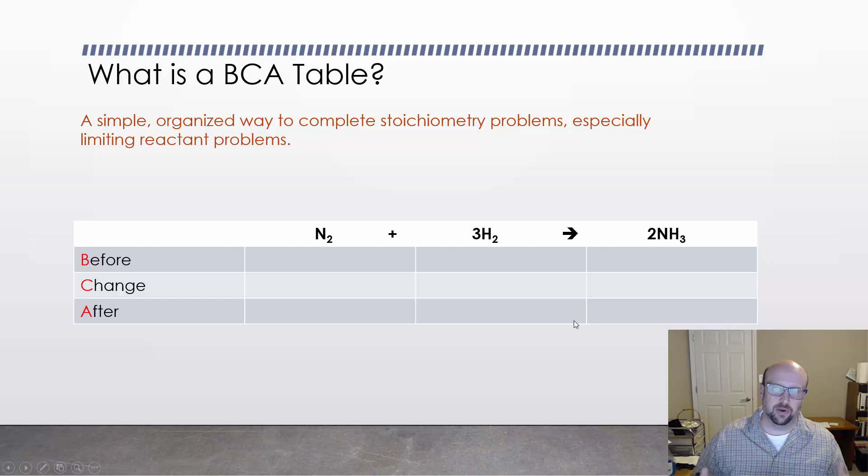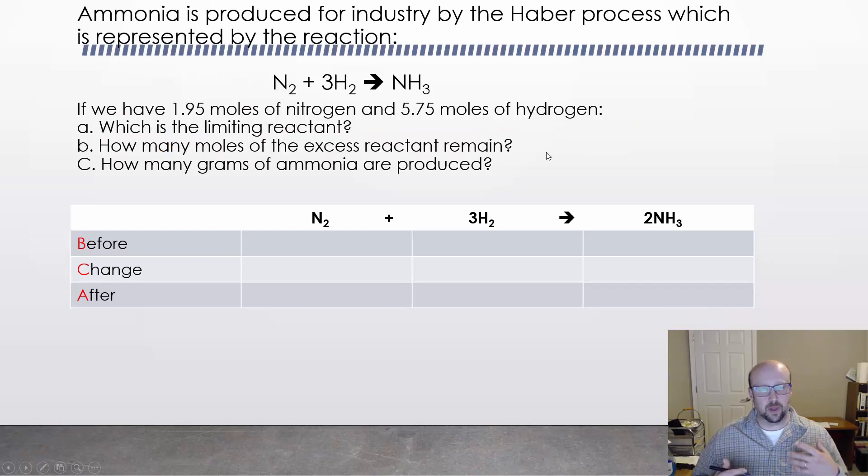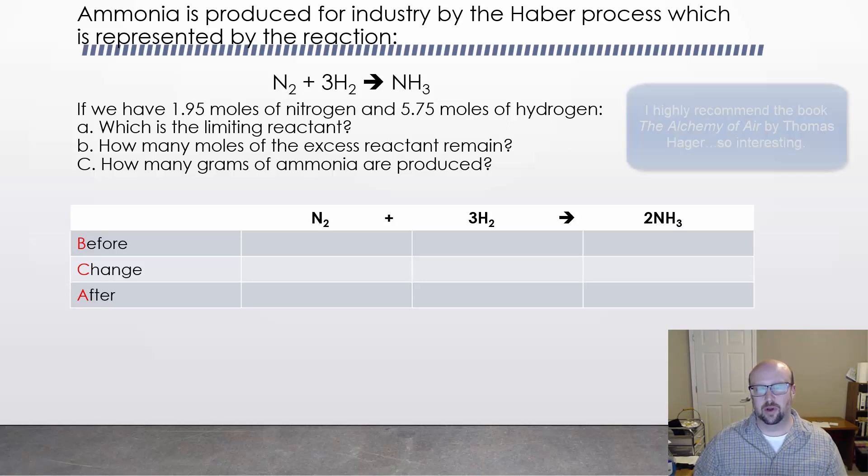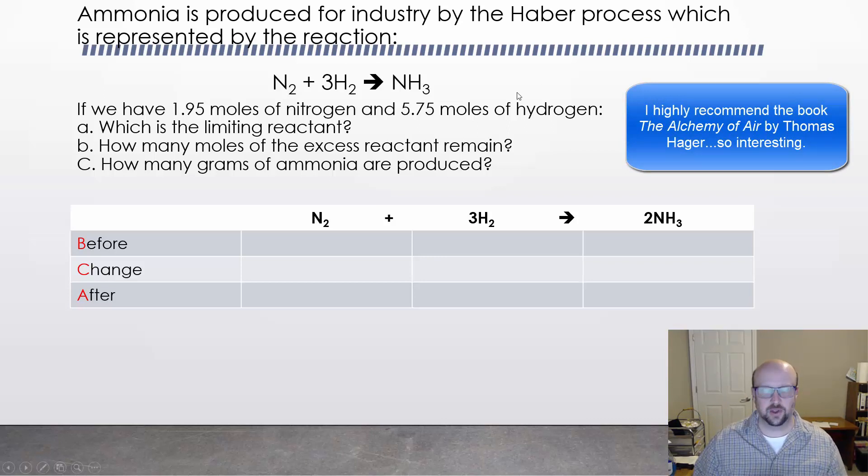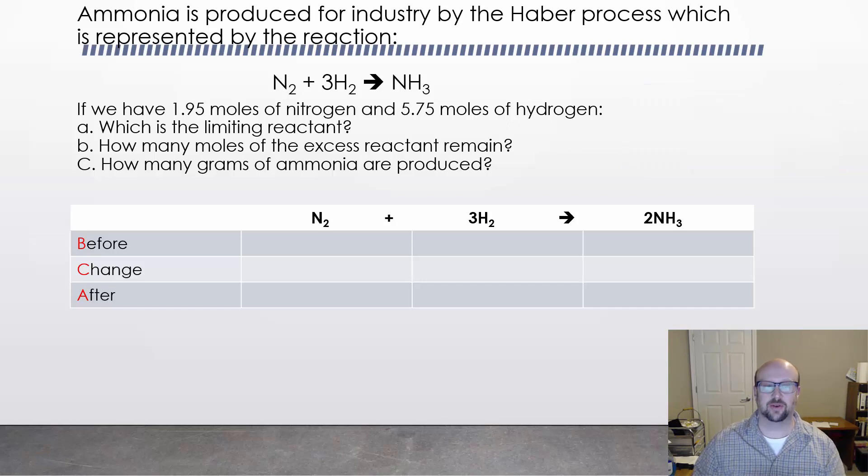You might be thinking we would do this anyway if we were doing a stoichiometry problem, but I think you'll see that the layout here is really useful and allows you to do many things at once. So the best way to see this is just to jump in and see what one of these problems looks like. In our problem, we're going to work with this really common reaction, the Haber process. We're going to take diatomic nitrogen and combine that with diatomic hydrogen to get ammonia. In our problem, we're going to say that we have 1.95 moles of nitrogen and 5.75 moles of hydrogen to start with.